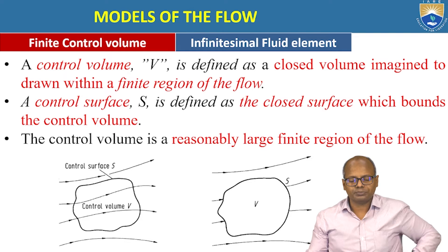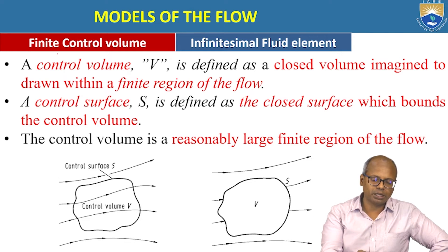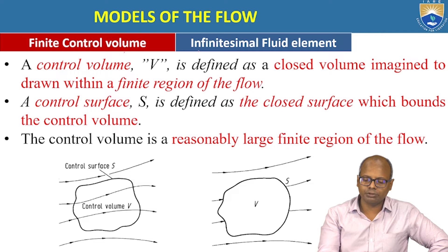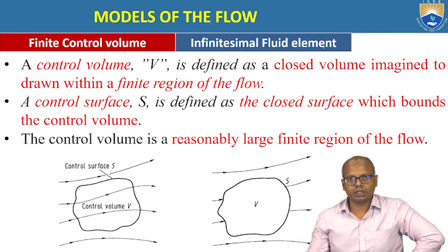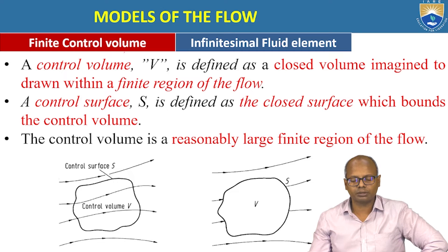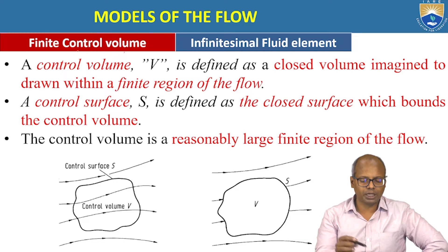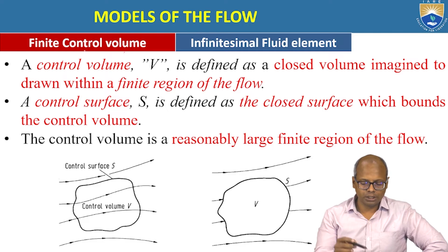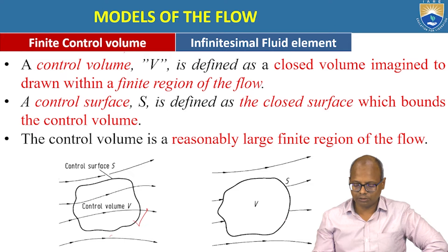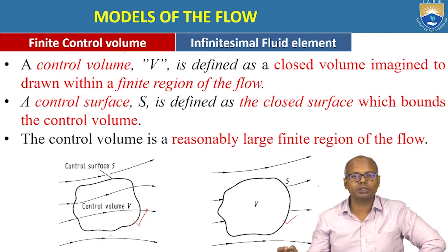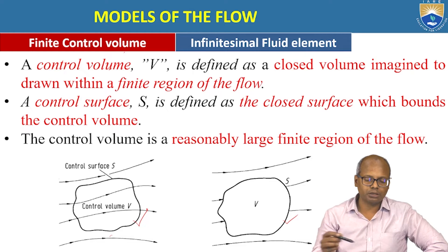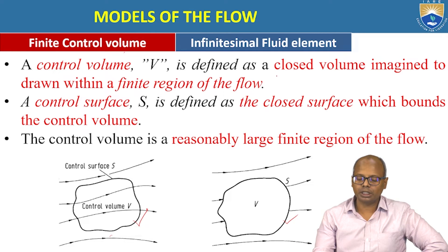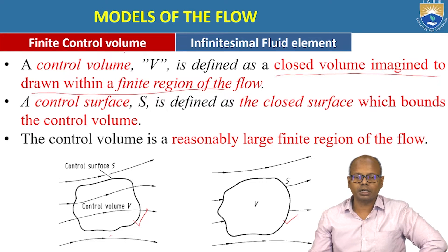Coming to models of flow, we have the finite control volume and the infinitesimal fluid element. These are the two broad classifications of models of flow. In the finite control volume, we have two types: one is the control volume fixed with fluid moving through it, and the other is the control volume moving along with the fluid. The control volume means it is a closed volume imagined to be drawn within a finite region of flow.